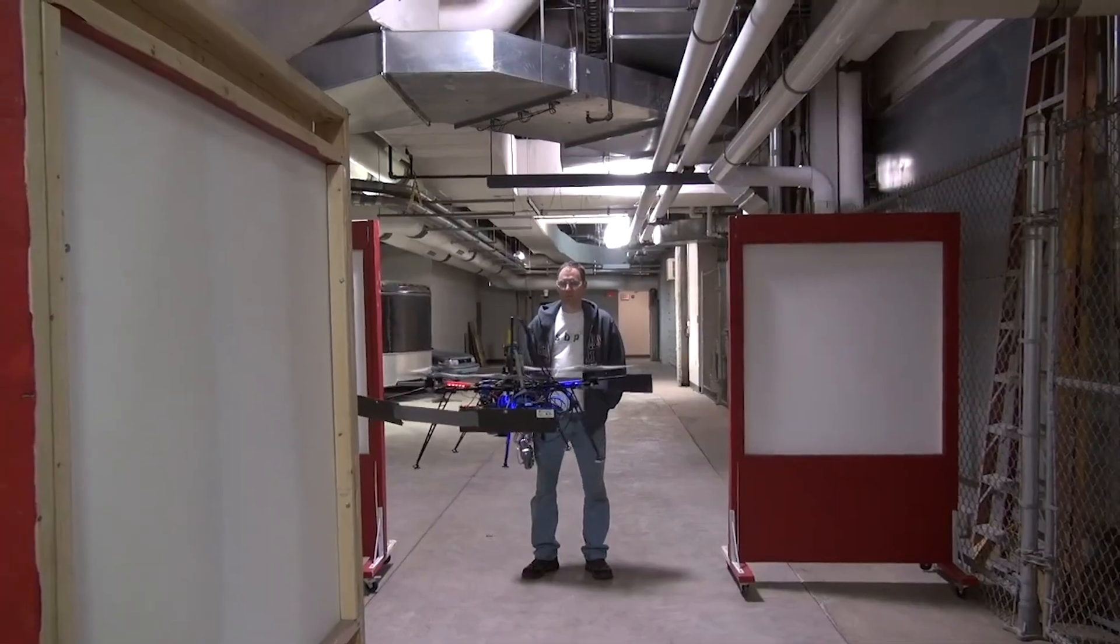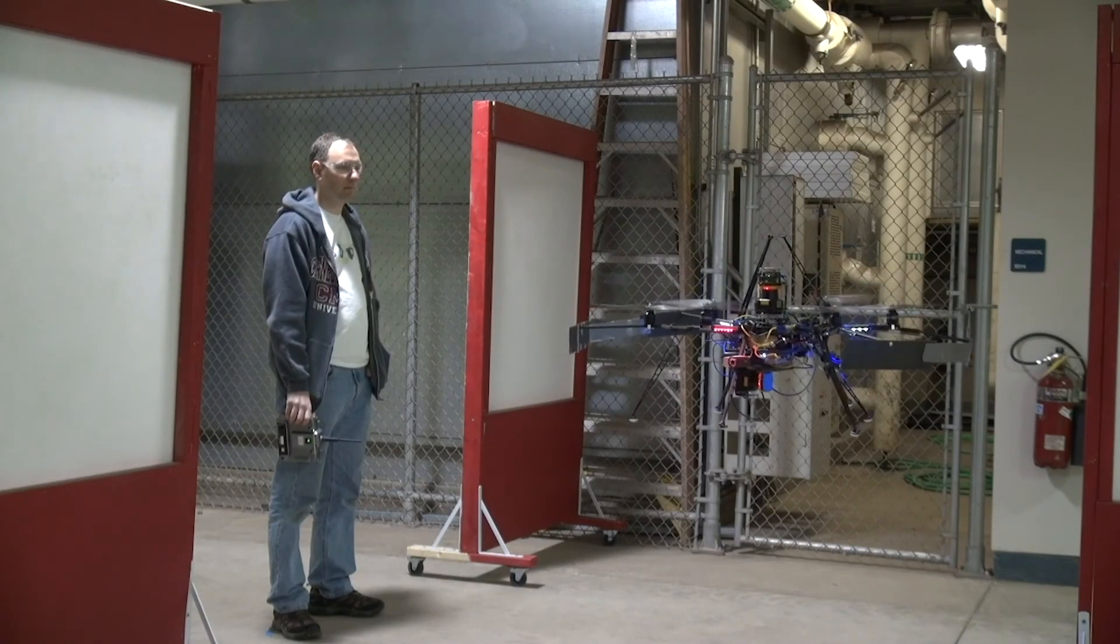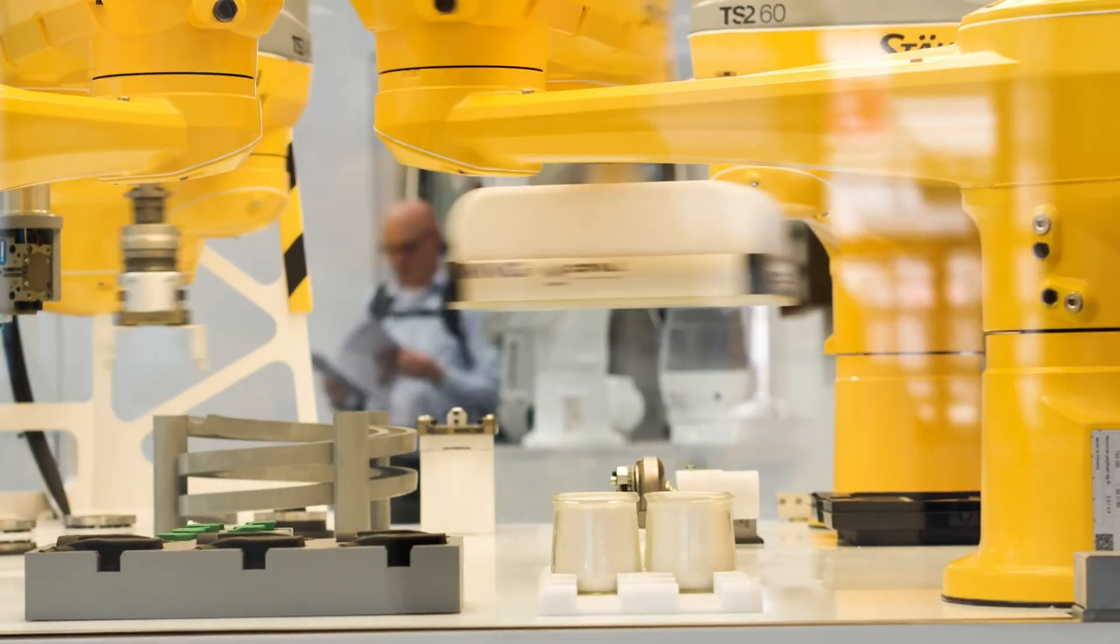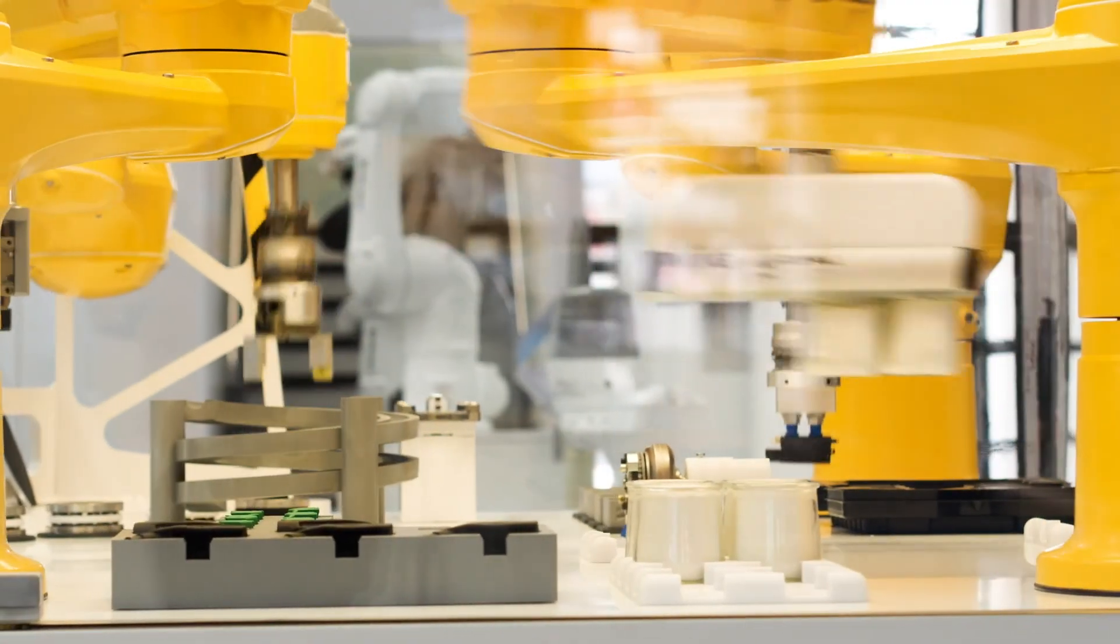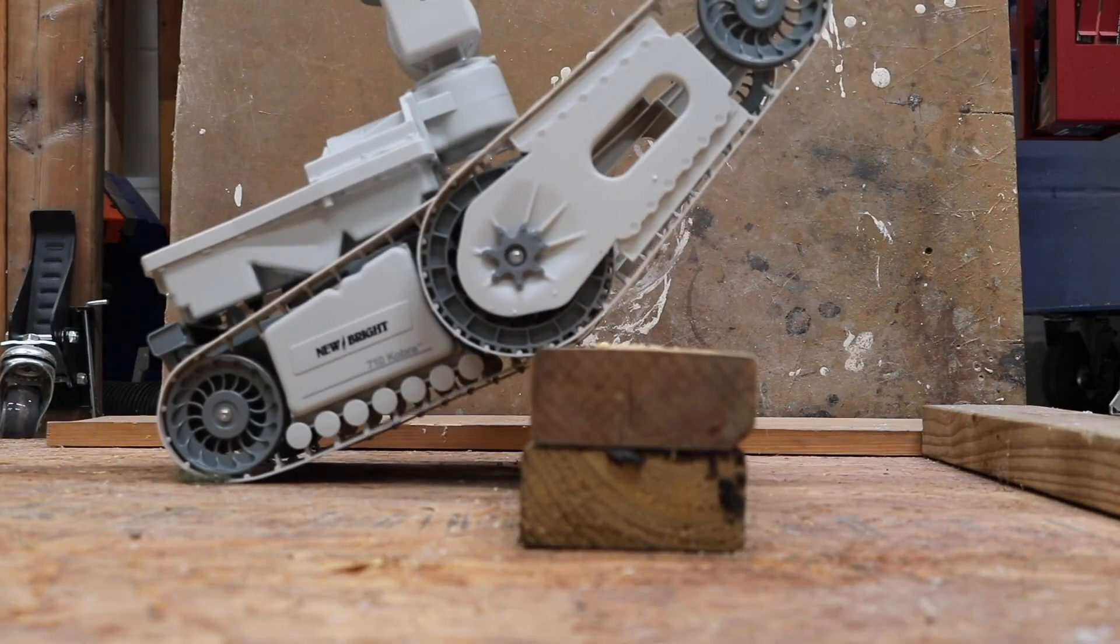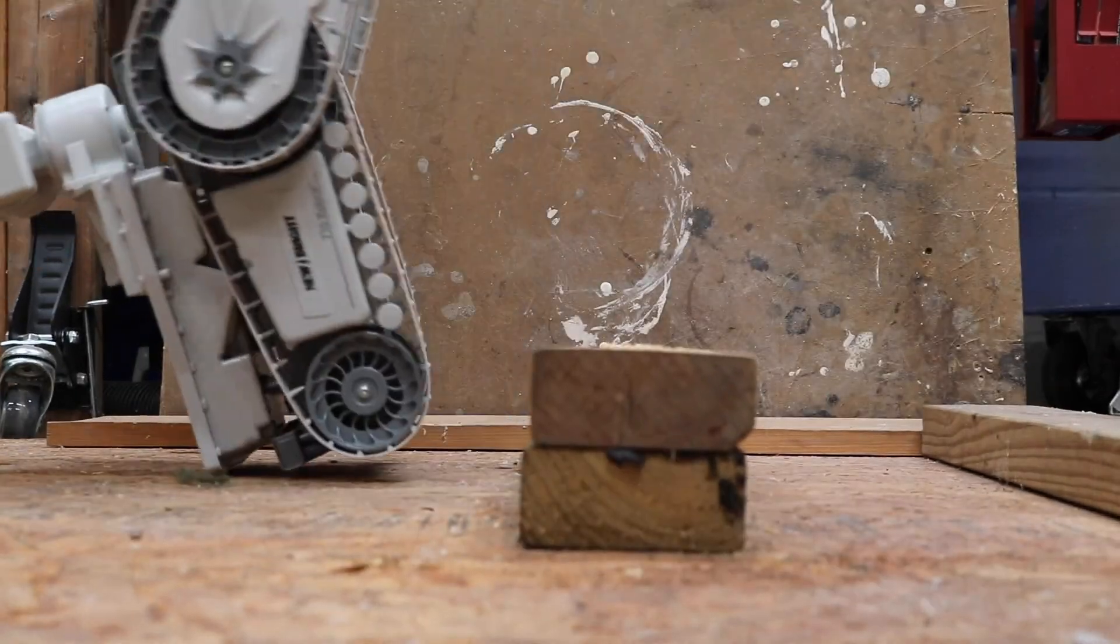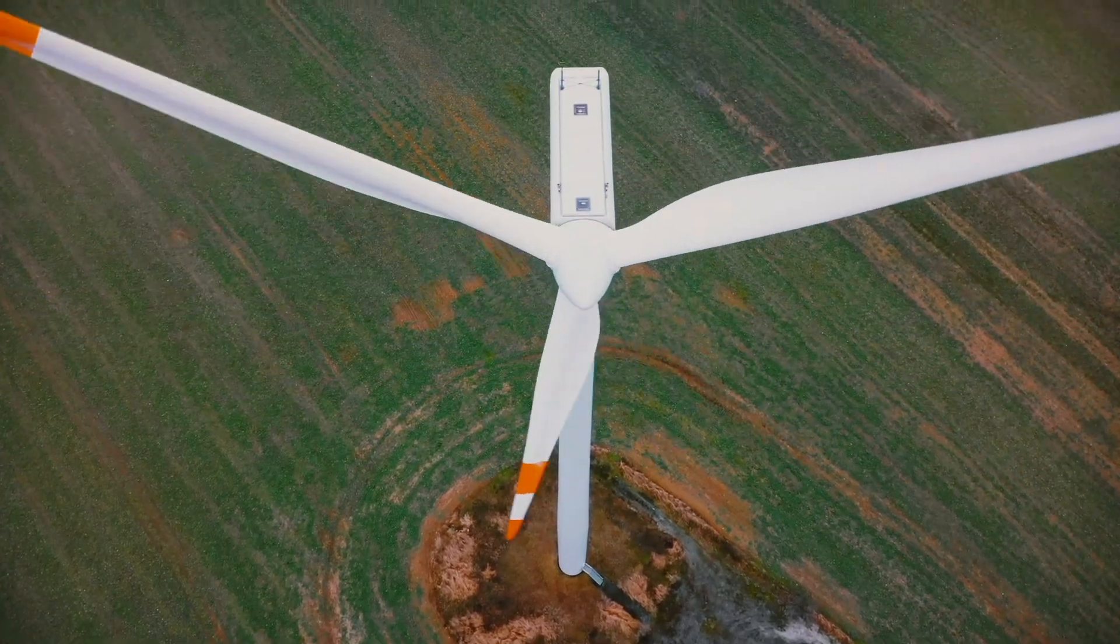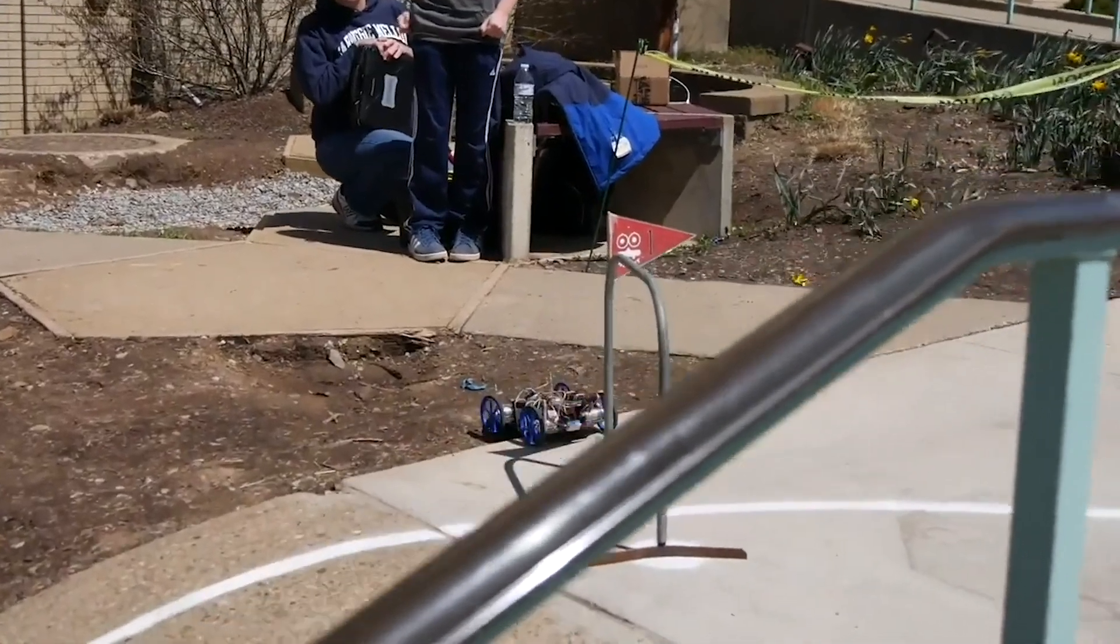This can be a particularly challenging problem if the path it is supposed to follow goes close to obstacles or near dangerous machinery. The robot must be very careful to follow the path exactly. And even then, problems can arise. What if the robot drives over a rock, gets bumped, or a strong wind starts blowing? These real-world issues can cause the robot to drift off its desired course through no fault of its own.